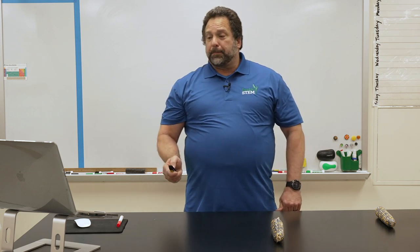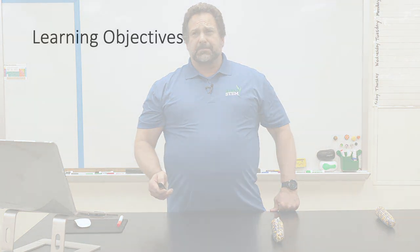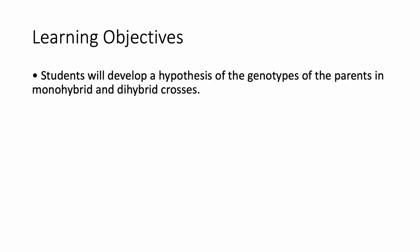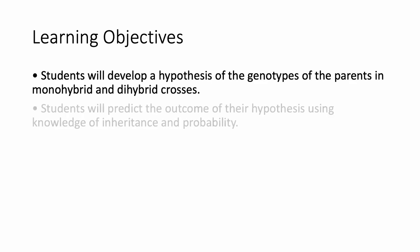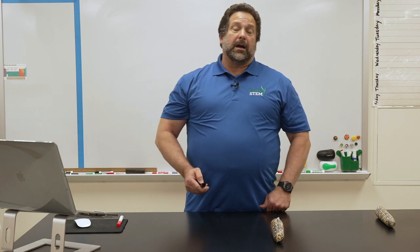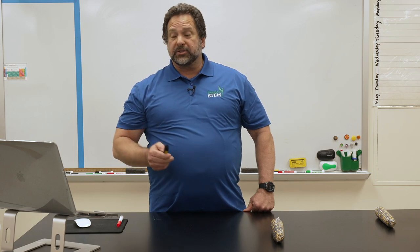One of the purposes of the activity is to get specific objectives aligned with genetics and also bring some math into the science curriculum, because math is always a tool for science. Students will develop a hypothesis for genotypes of parents of a monohybrid cross and a dihybrid cross, predict the outcomes using knowledge of inheritance and probability, and quantify the results by performing a Chi-Square Analysis.